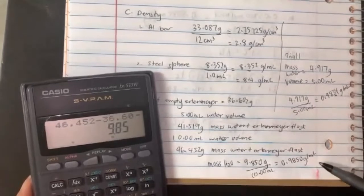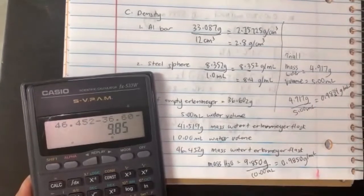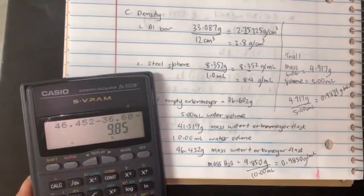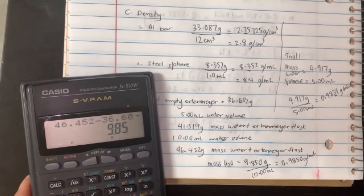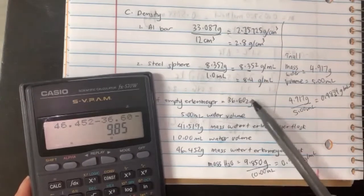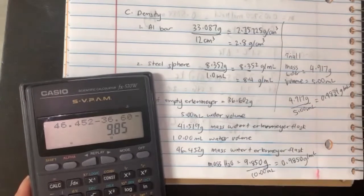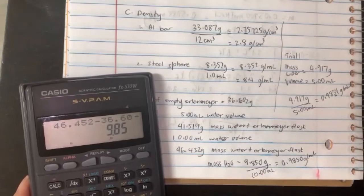That would be the density for trial two. In your data sheet, you'll have more values—you'll have five of them. You'll do them over and over. Don't forget to subtract out the mass of the empty flask. That's it, hope this helps you.